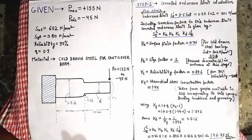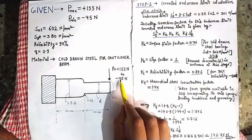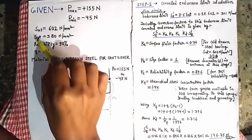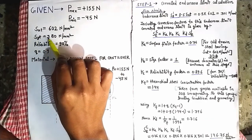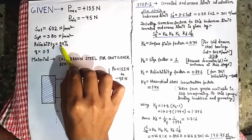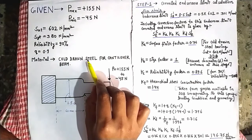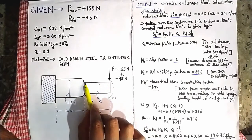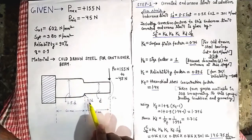The maximum load acting is 155 Newton and the minimum load is minus 45 Newton — a fluctuating load varying between these values. The ultimate tensile strength is 602 Newton per mm² and the yield strength in tension is 380 Newton per mm². Reliability is 90 percent and notch sensitivity is 0.9. The material is cold drawn steel. The diameter D at the fillet section is what we need to find. The dimension from the force to the fillet section is 100 mm, the larger diameter is 1.5D, and the fillet radius is 0.2D.